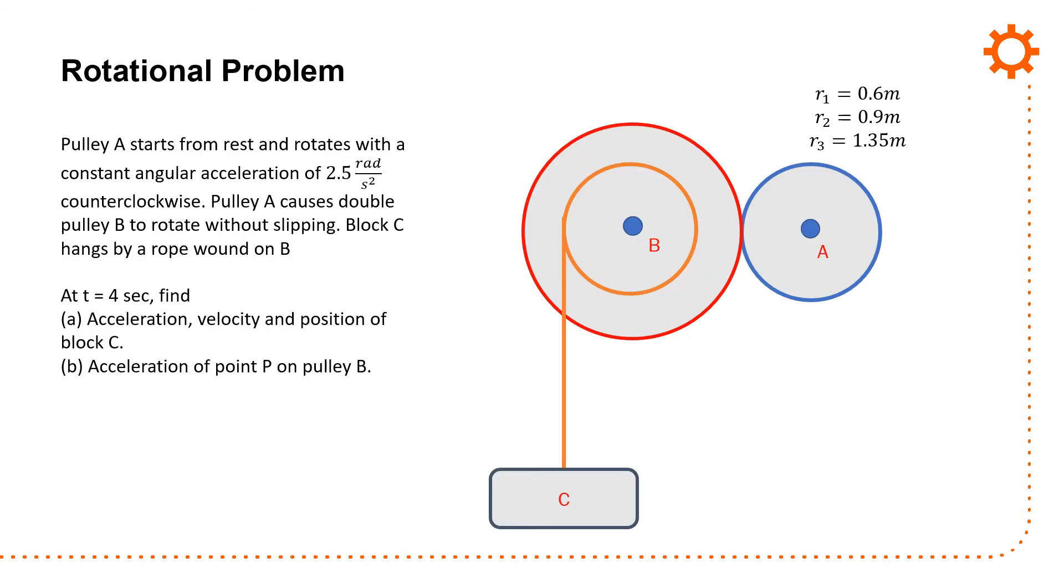A final problem here, looking at a system consisting of two pulleys, one which has an inner diameter which is going to be given in a second. Pulley A starts at rest and rotates with a constant angular acceleration of 2.5 radians per second squared counterclockwise. Pulley A causes double pulley B to rotate without slipping. Block C hangs by a rope wound on B. At t equals four seconds, you're asked to find the acceleration, velocity, and position of block C and the acceleration of point P on pulley B. You're given r1 which is 0.6 meters, r2 which is 0.9 meters, and r3 which is 1.35 meters. It starts from rest so omega 1 equals 0, and alpha 1 or alpha A is 2.5 radians per second squared.